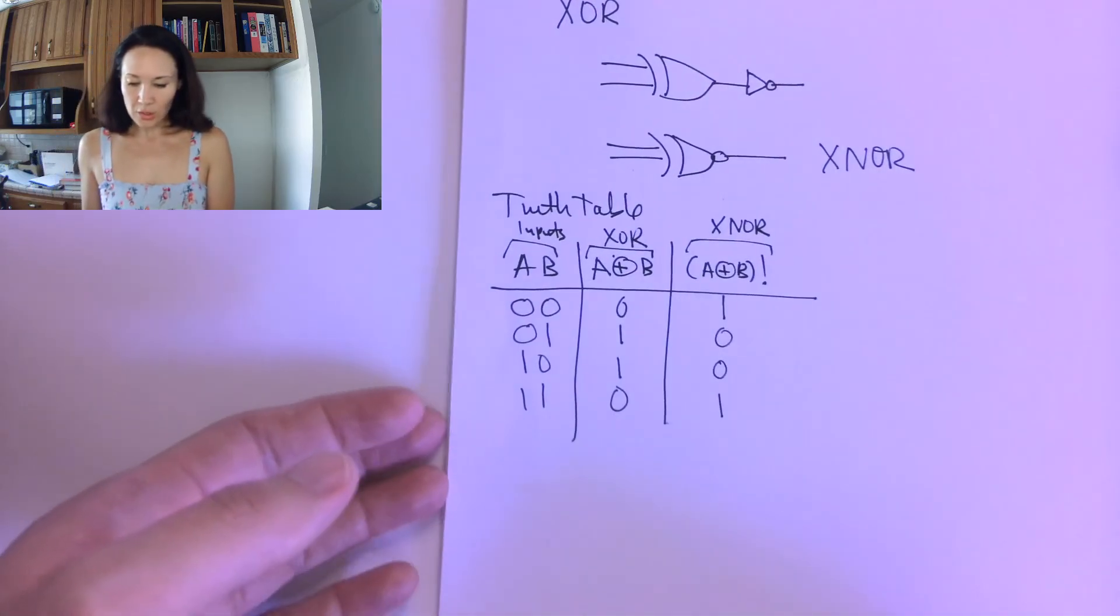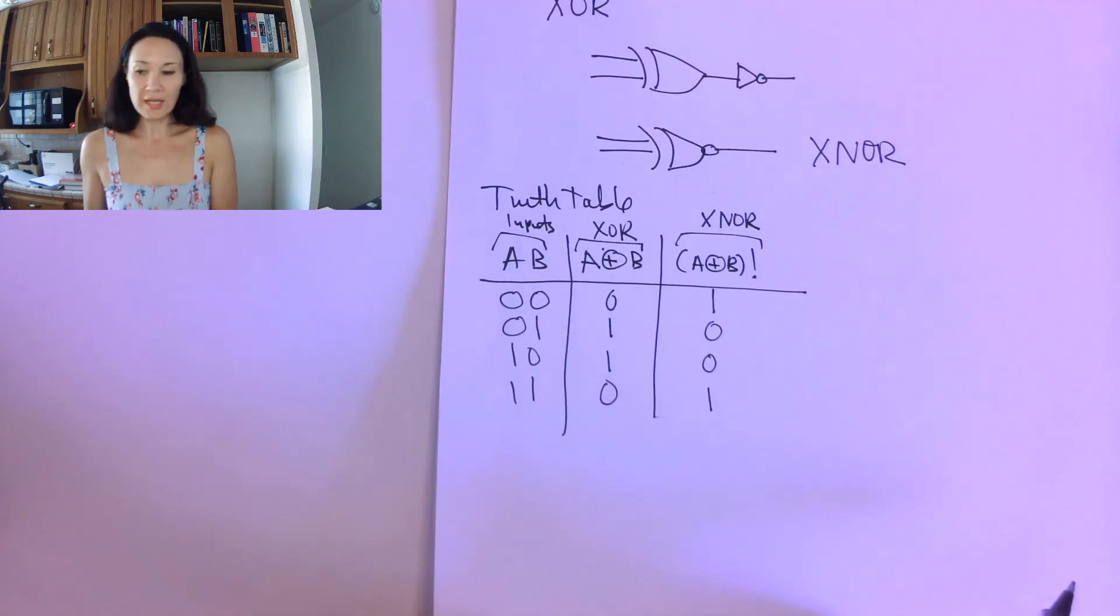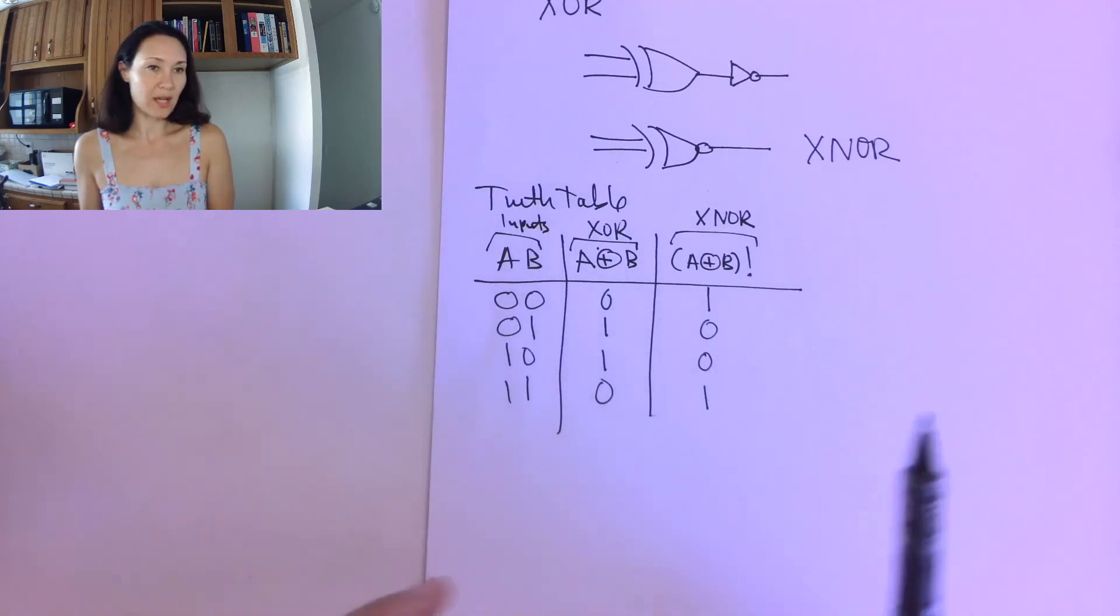In the next video, I'll show you an example of a circuit, a digital logic circuit that has all of these new gates in it. And I'll give you some tips on how to make the truth table for the entire function.